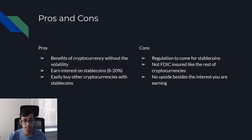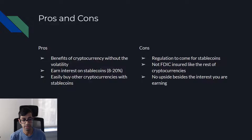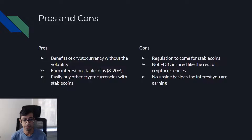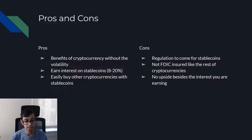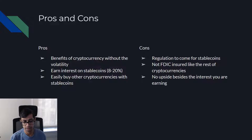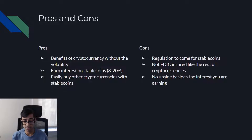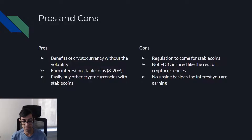Let's talk about the pros and cons. The pros are you get the benefits of cryptocurrency without the volatility. If you're looking to send money around the world, this is a very efficient way of doing it — because if you send someone 0.1 Bitcoin, the value might be different even 30 minutes or an hour later. You can also earn interest on stablecoins anywhere from 8% to 20% on some of the algorithmic ones, and you can easily buy other cryptocurrencies with stablecoins by swapping them on a centralized or decentralized exchange.